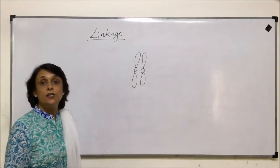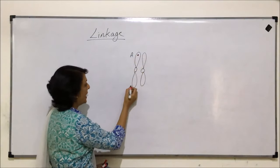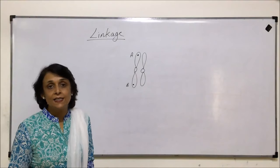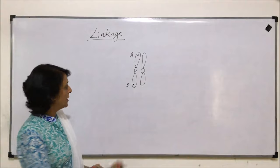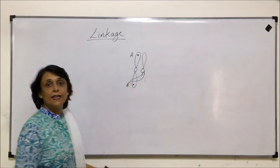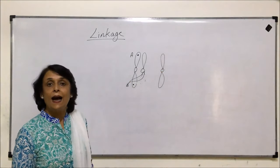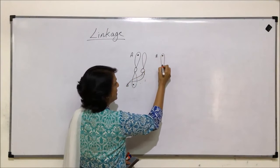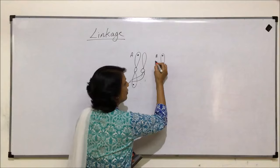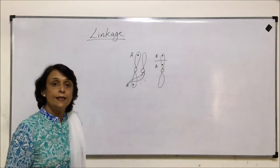On a chromosome, genes are located at certain places which we call loci. Say there is a gene A here and a gene B here, and they are located on the same chromosome. The chances of these genes getting separated are more, because whenever crossing over takes place — suppose there is a crossing over here — then these genes will get separated. So the closer the genes, the less the chances of them getting separated. In a second situation, if gene A is here and gene B is here, they only separate when crossing over takes place between them.